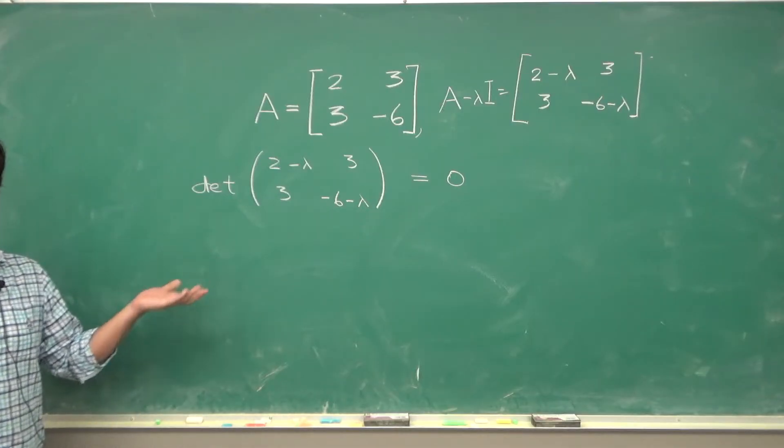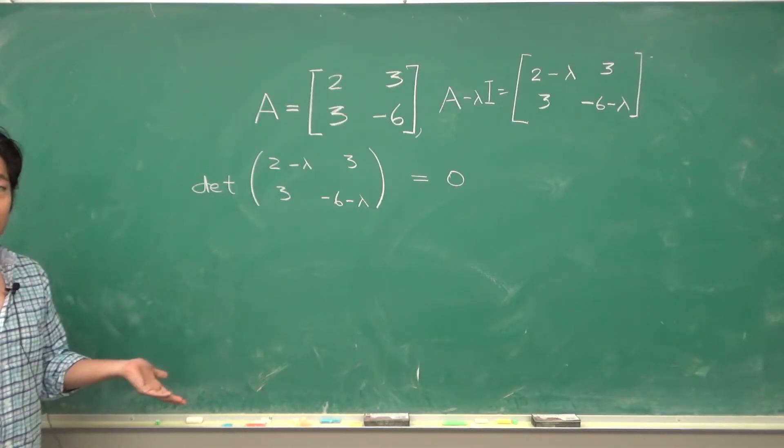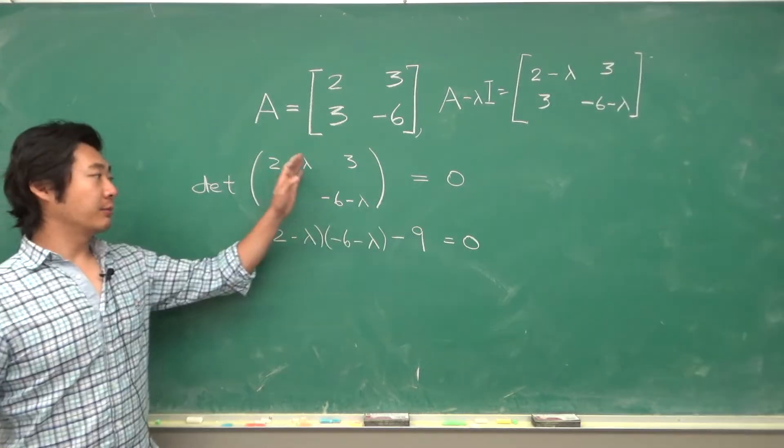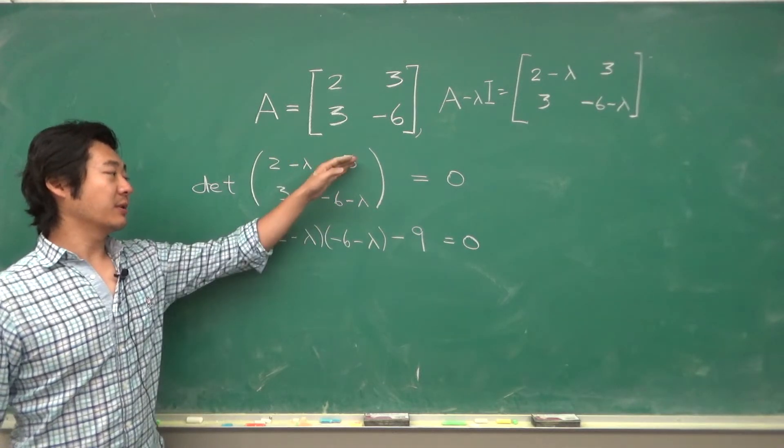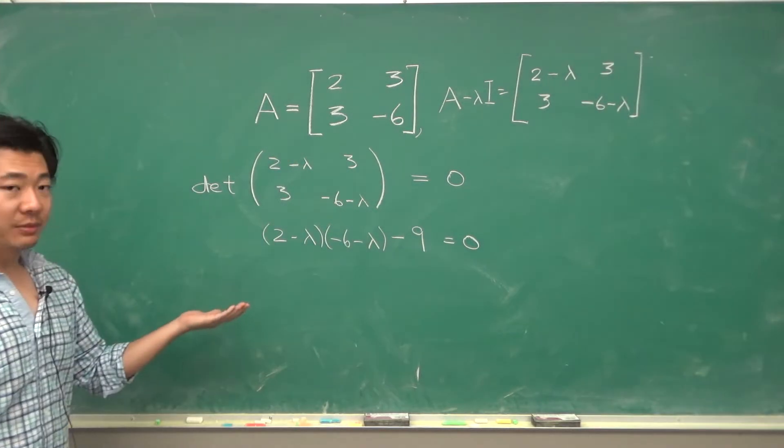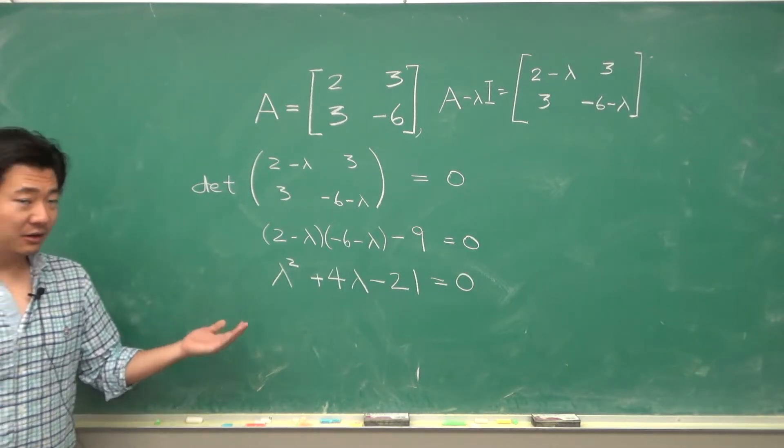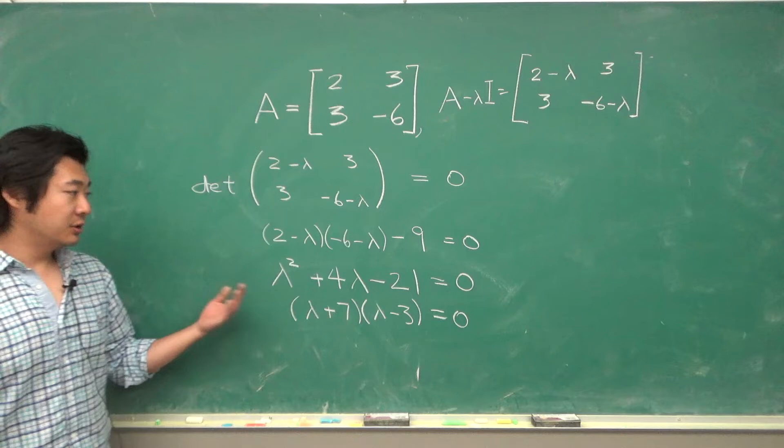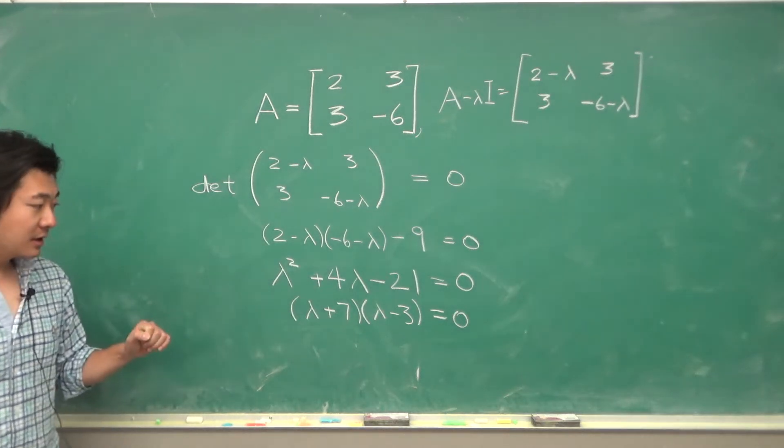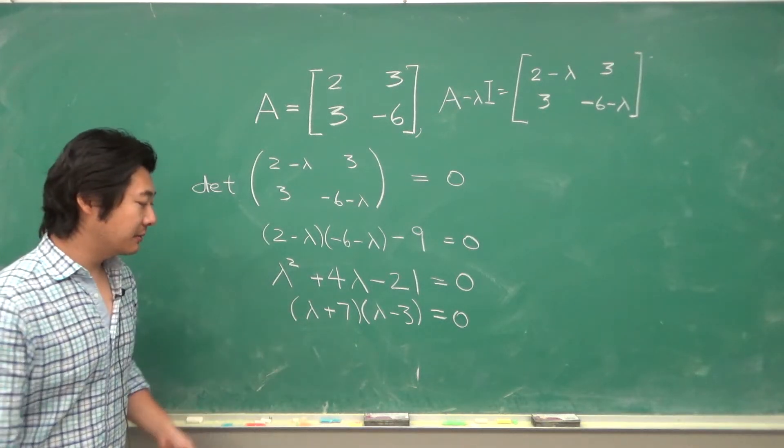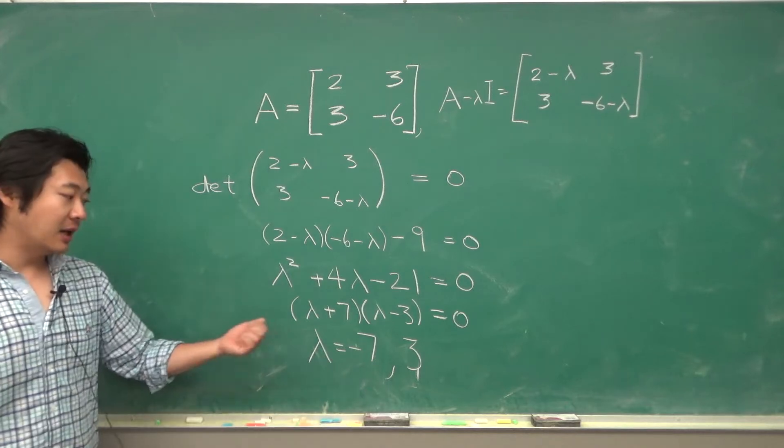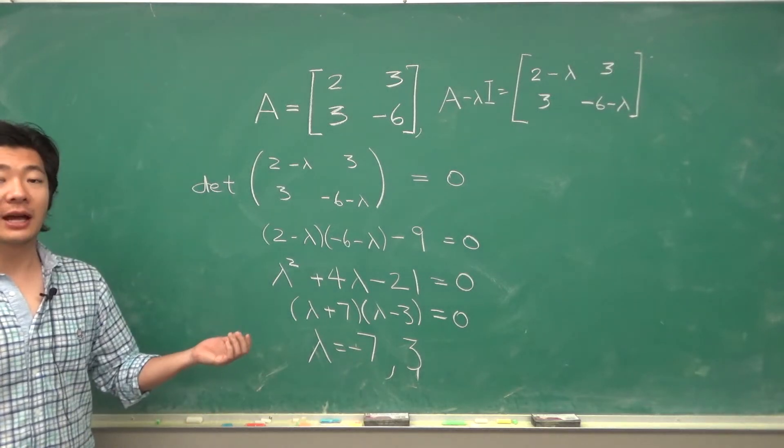So here is our characteristic equation. The determinant of a 2 by 2 is not too bad. It's just the product of the diagonals minus the product of the off diagonals. So if you multiply this out you get this quadratic equation which we can factor so that the solution to this quadratic equation is lambda equals negative 7 and lambda equals 3. And negative 7 and 3 will be our eigenvalues.